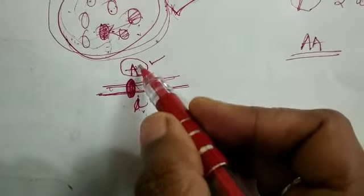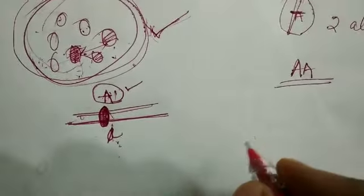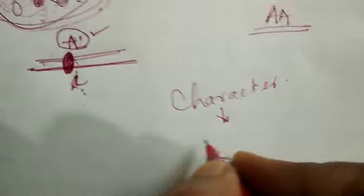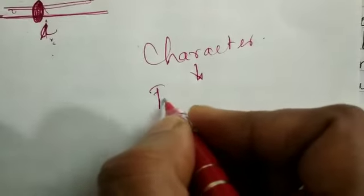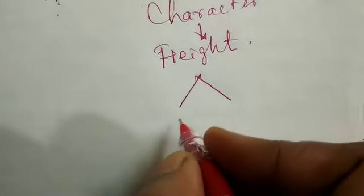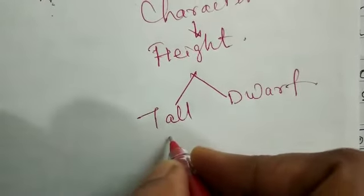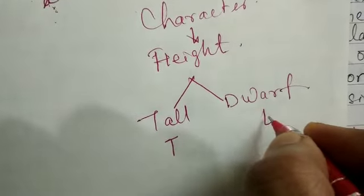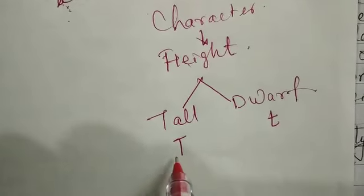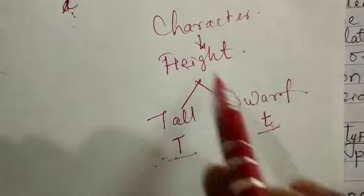These two alleles could be of the same type or they could be of alternating types. For example, if we take the character height, it has two alternative forms: one is tall and one is dwarf. Tall is represented as capital T and dwarf as small t. So the character height has two alleles, capital T and small t, which are the two alternative forms.